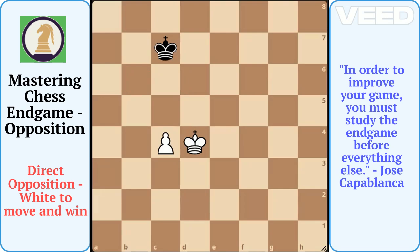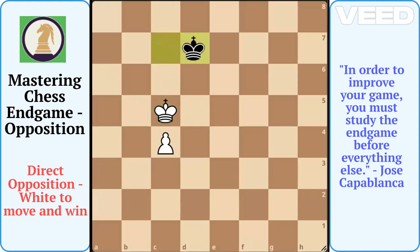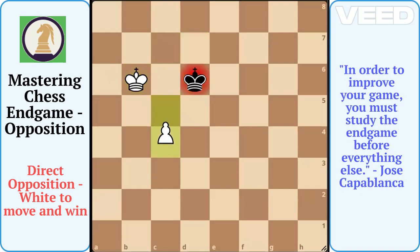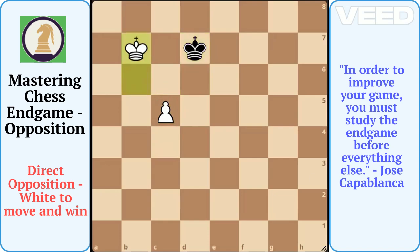White will move his king to c5, winning opposition. Now wherever the black king moves, it will give up at least one of the critical squares b6, c6, or d6. Suppose the black king goes to d7. Now the white king will go to the available critical square b6. Now wherever the black king moves, say d6, white can advance the pawn to c5. After king to d7, white can either advance the pawn to c6 or play king b7, winning direct opposition on the 7th rank. White will soon promote the pawn.